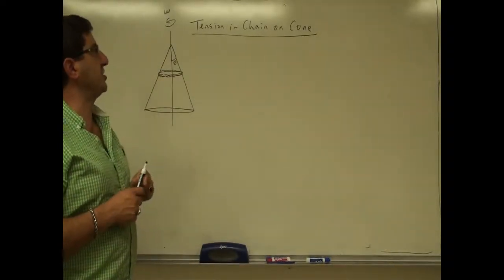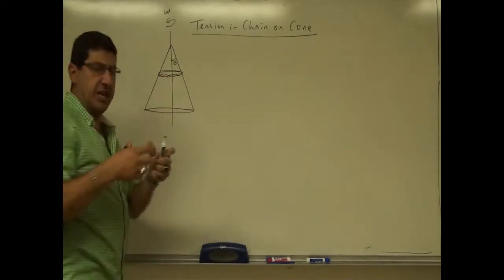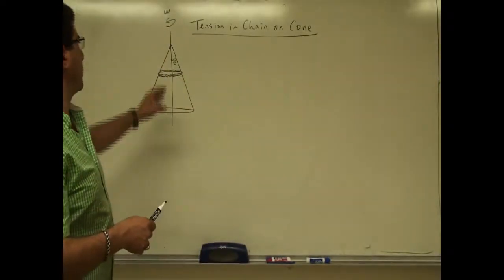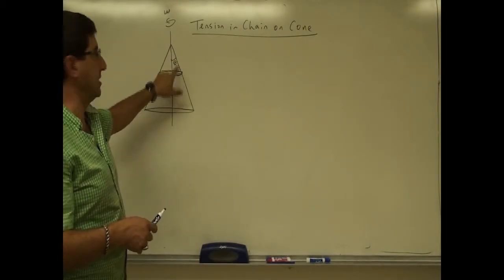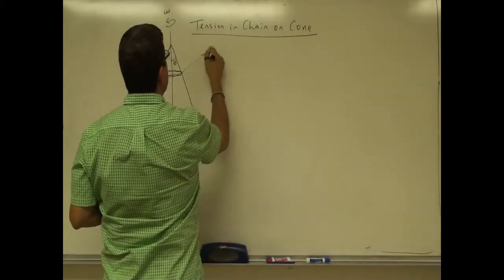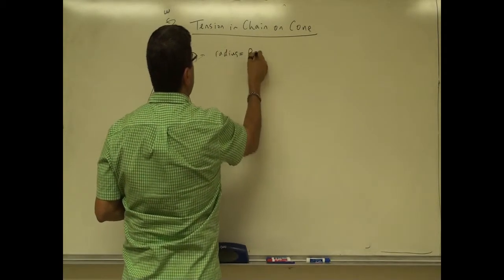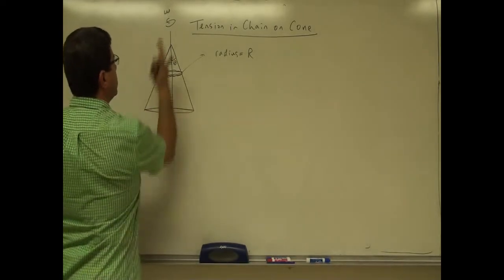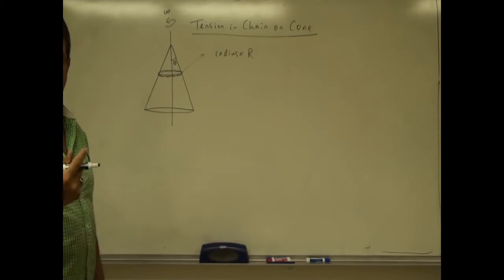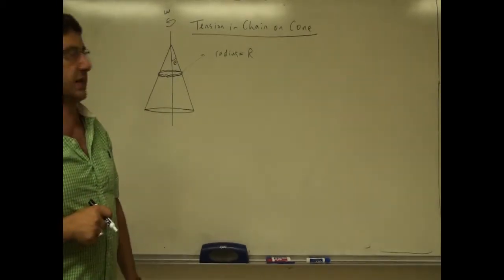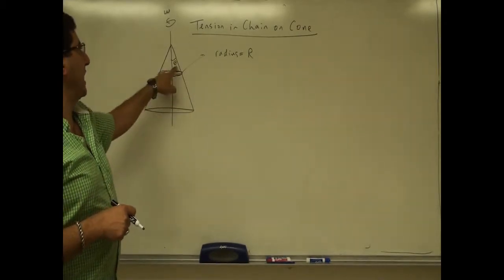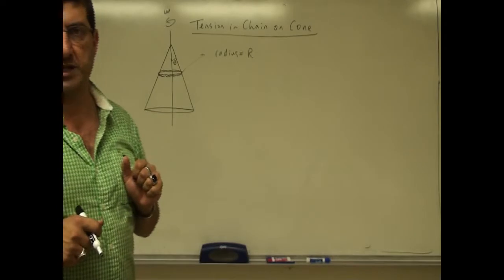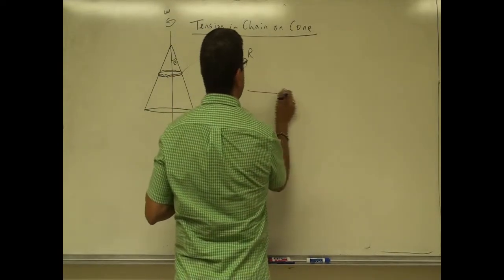Welcome back. Now I'm going to do a problem called tension in a chain on a cone. You get a chain of a certain length or a certain radius — it doesn't have to be a chain, it could be a rope, a string, or anything. You put it on a cone that has a half angle of theta, with the chain sitting on it. The chain's radius is R, and you spin the cone at an angular velocity omega in radians per second. The question is: what is the tension in the chain as a function of theta, R, and omega? So let's develop those equations with a free-body diagram.